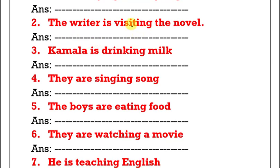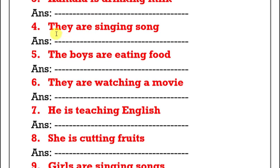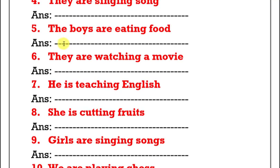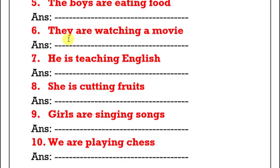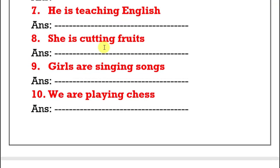Second one: 'The writer is writing the novel.' Answer: 'The novel is being written by the writer.' Third: 'Kamala is drinking milk.' Answer: 'Milk is being drunk by Kamala.' Fourth: 'They are singing a song.' Answer: 'A song is being sung by them.' Fifth: 'The boys are eating food.' Answer: 'Food is being eaten by the boys.' Sixth: 'They are watching a movie.' Answer: 'A movie is being watched by them.' Seventh: 'He is teaching English.' Answer: 'English is being taught by him.'